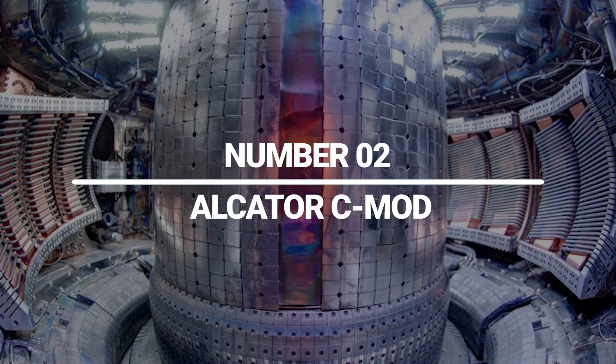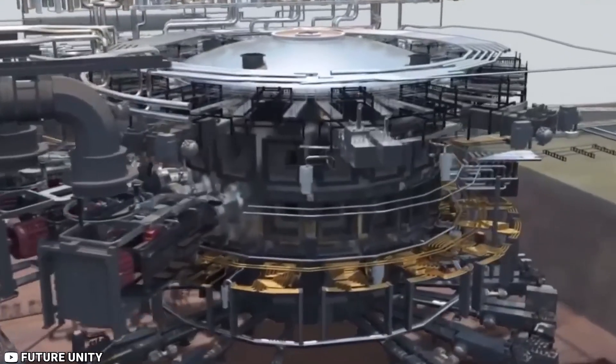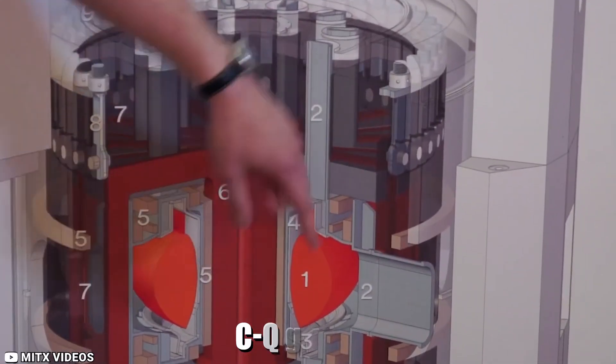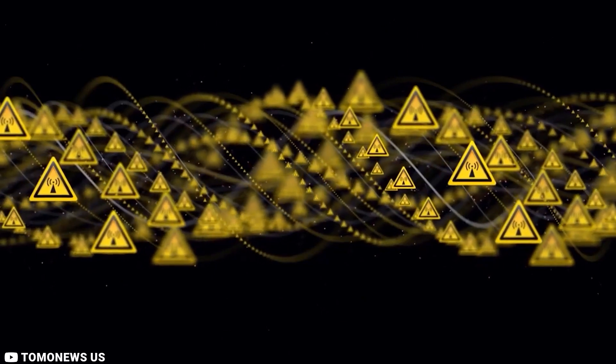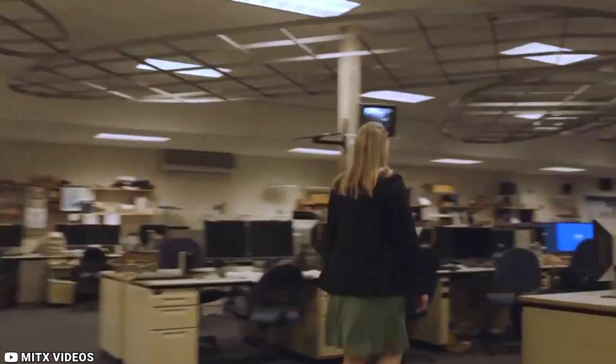Number 2. Alcator-C Mod. In operation from 1991 to 2016, the Alcator-C Mod was housed at MIT. The Alcator-C Mod possesses the strongest toroidal magnetic field and the highest plasma pressure. Until 2016, it served as a significant research center for fusion in the United States.